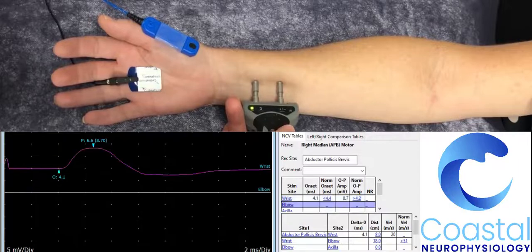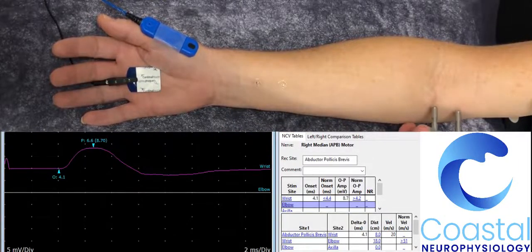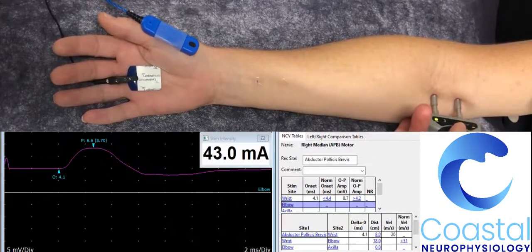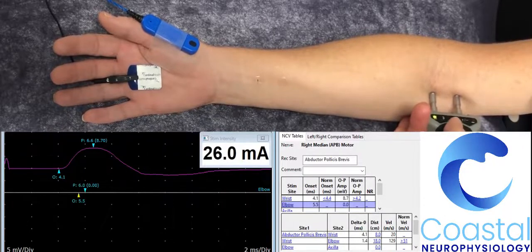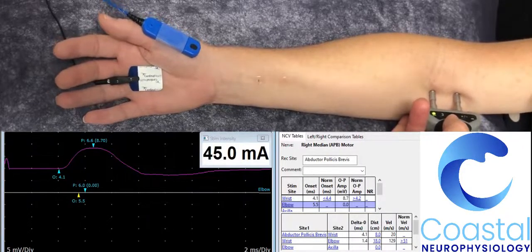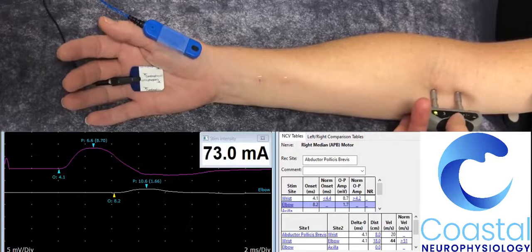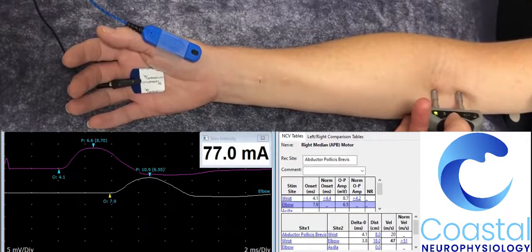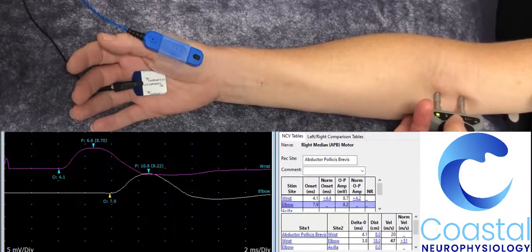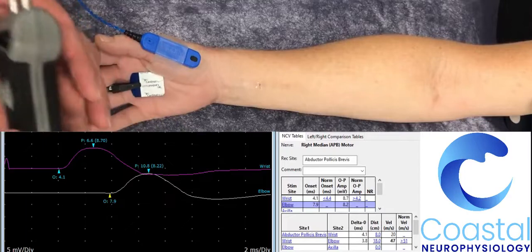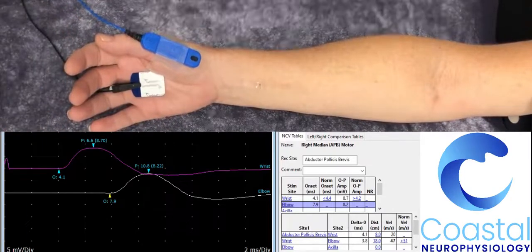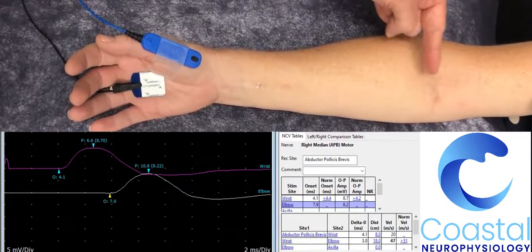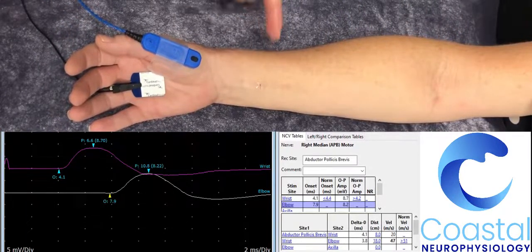If I store this signal and then work my way further up the nerve and stimulate again, you can see a second action potential will be propagated. This allows us to measure the distance between the second stimulus point and the first.